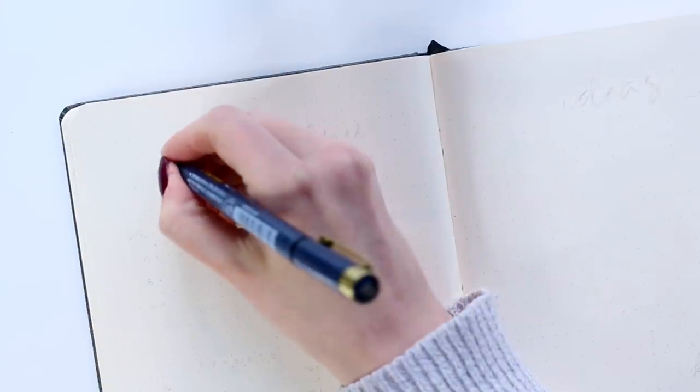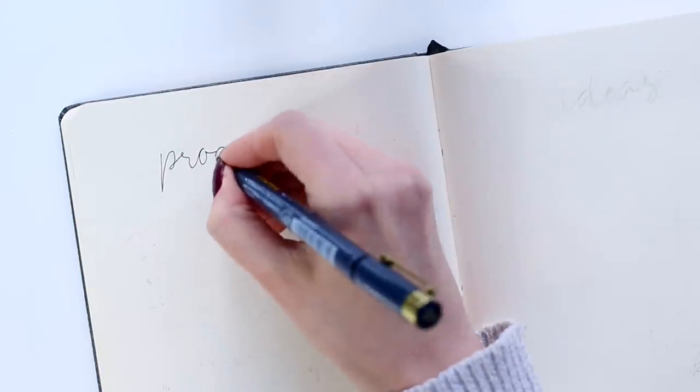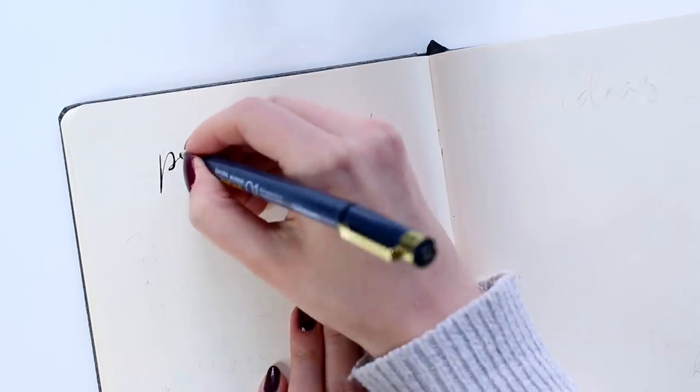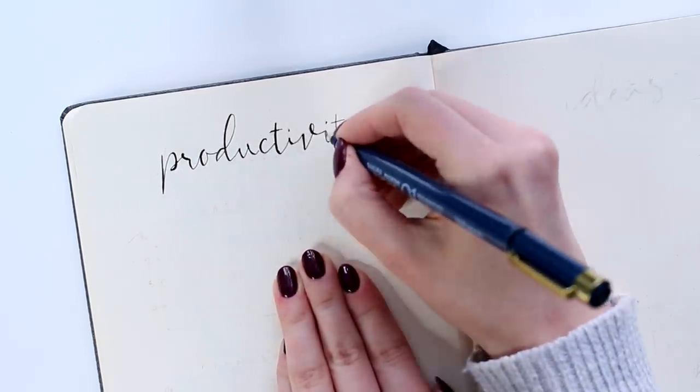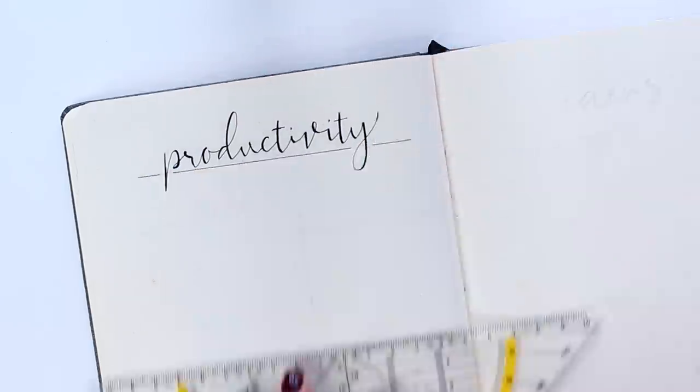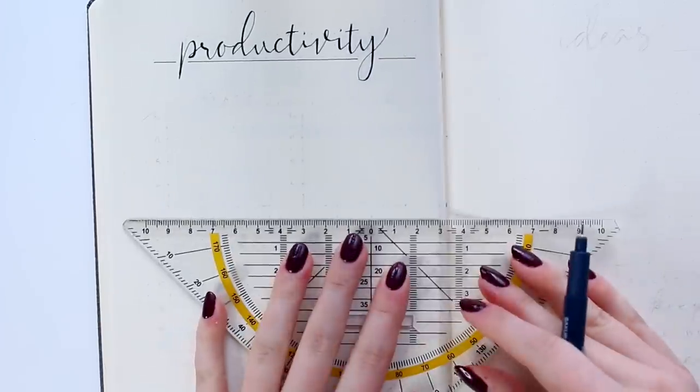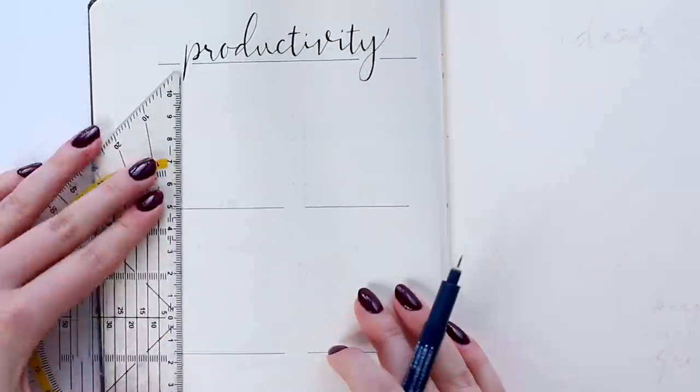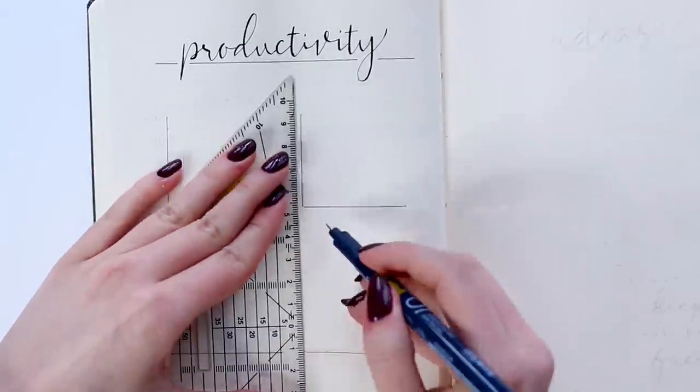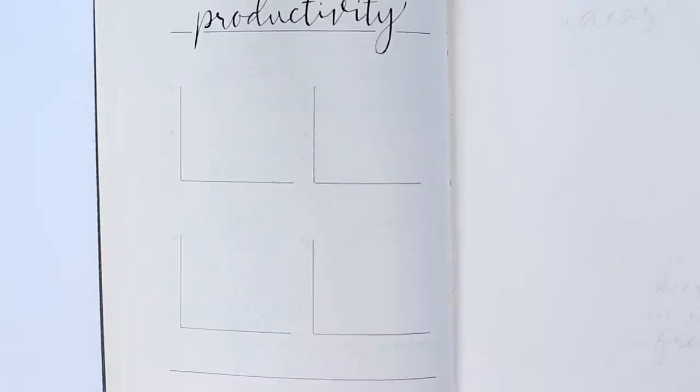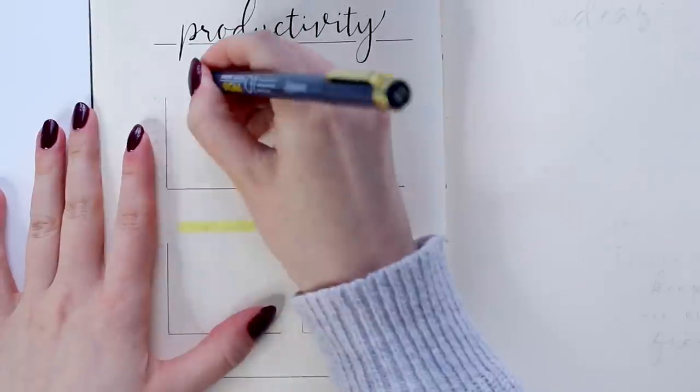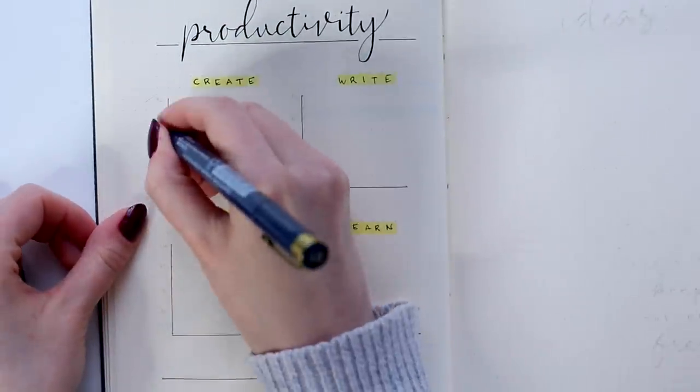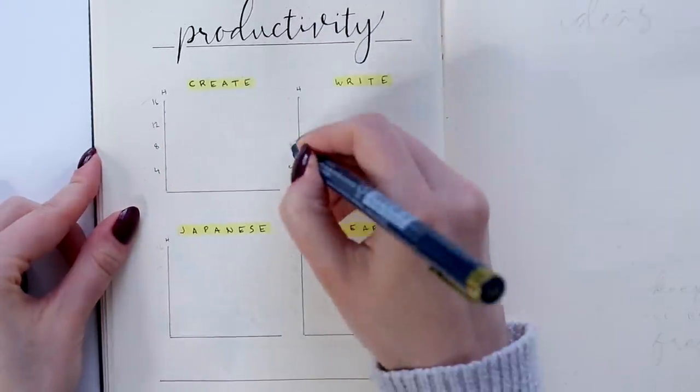So if the previous page was for self-care habits, this will be for the productivity stuff. And I want to try this new tracking method I did once in the past. So I chose four of my most important habits I want to track. And then I'm drawing these small graphs for each of those habits. The idea here is to track how many hours you're using for that certain habit in a week. So every time I'm doing that certain habit, I will make the bar higher. And then I can see how many hours I spent doing that during one week in total.